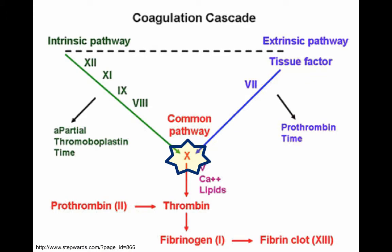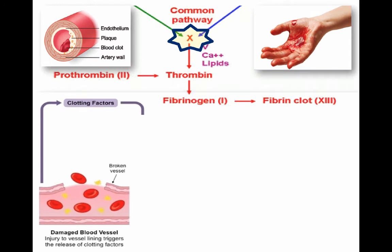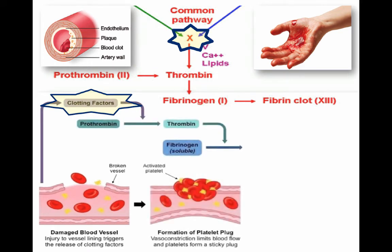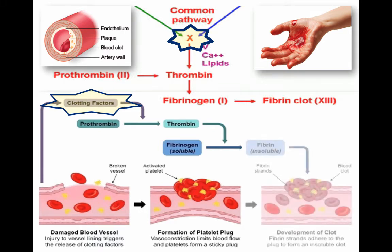Back to the coagulation cascade, you can see that both the intrinsic and the extrinsic pathways meet at the common pathway where there's factor X. As you can see in the picture on the left, either through the intrinsic or extrinsic pathway, when blood vessels have damage, the clotting factors are activated. They meet at the common pathway where factor X is, and that activates factor Xa, and then thrombin activates the formation of the platelet plug, eventually leading to a fibrin clot.